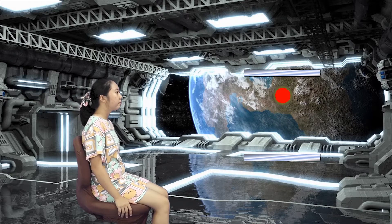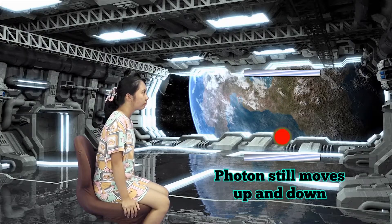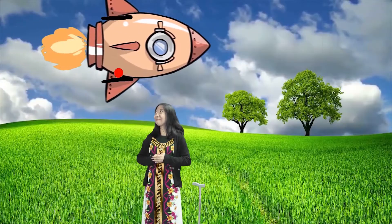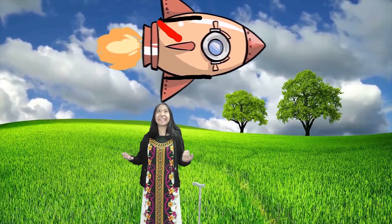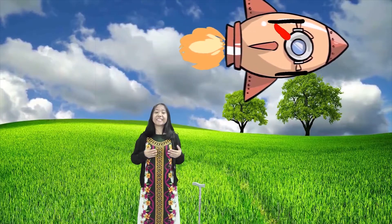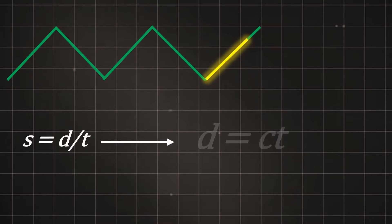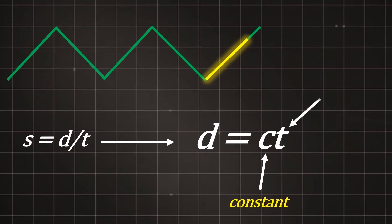The moment you started moving, you observed that the clock still moves up and down. But from my perspective, it travels diagonally, and it travels a longer distance. Since the photon travels a longer distance and the speed of light is constant, each tick takes longer time relative to me since I am on Earth. So your clock moves slower, and the faster you move, the slower your time is.